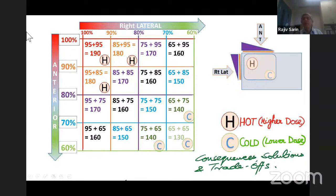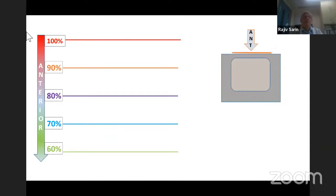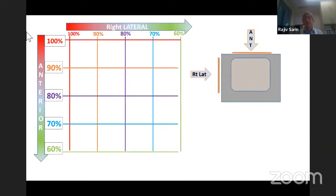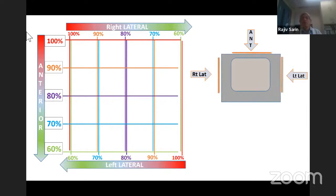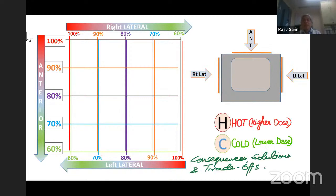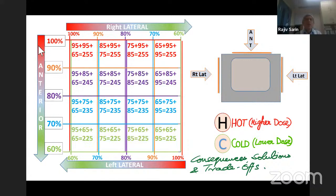For those watching on YouTube later, please pause and draw it for yourself to see whether you get it right. If you use wedges in the lateral fields with the thick end anterior, you correct for the anterior-to-posterior gradient created by the anterior field. In a four-field box — anterior, posterior, right lateral, left lateral — any area underdosed by one beam is compensated by the opposite beam because it is two pairs of parallel opposed beams, resulting in homogenous dose distribution throughout.